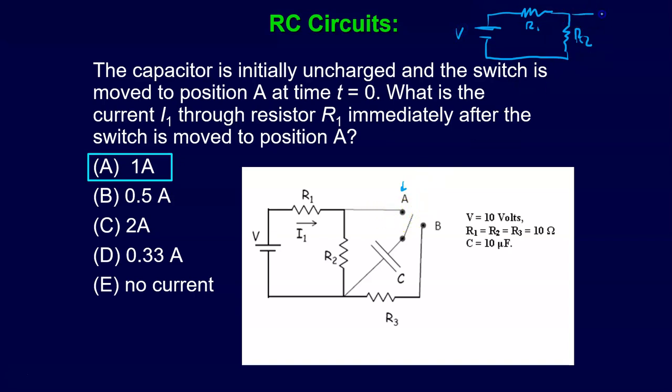And then we'd have this capacitor over here. And so that's how the circuit would look if you go through position A. Now, if you go to position B, basically it's just that capacitor and then in series with some resistor, we'll call it R3. And so that's basically the two circuits we have.